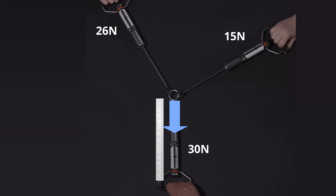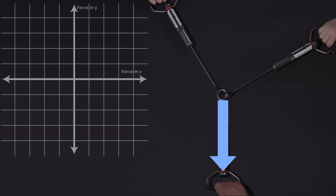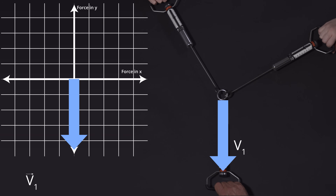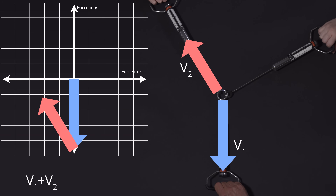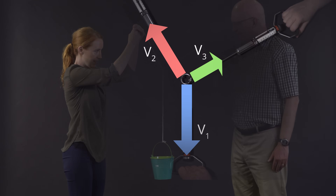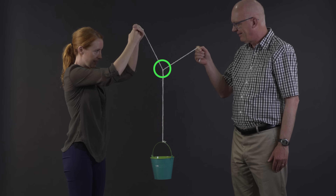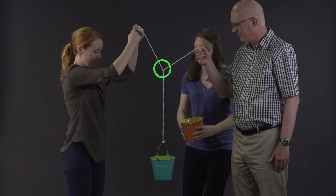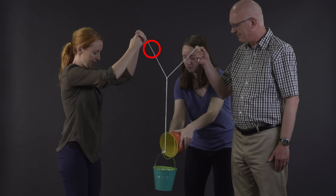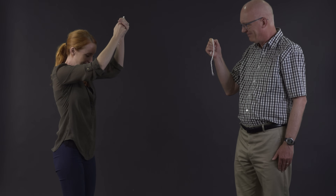To check whether these forces add to zero in a vector sense, we sum them graphically: V1 plus V2 plus V3. And, as in the previous example, they do sum to zero. These forces are proportional to the ones in the ropes carrying the suspended bucket. If one of the upper thin ropes is not able to produce the force demanded of it, the system will fail.